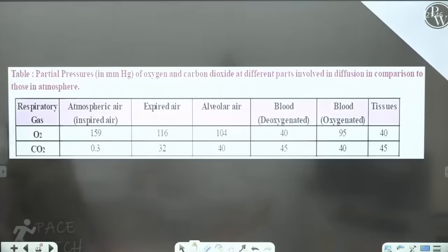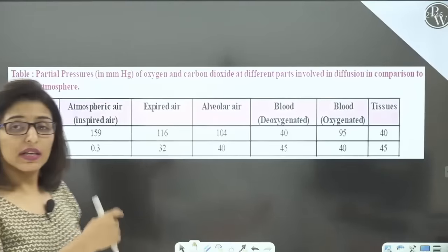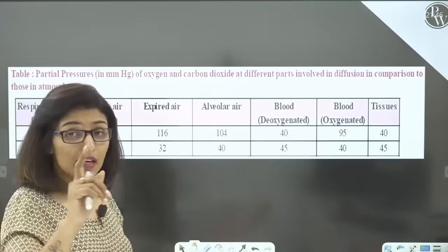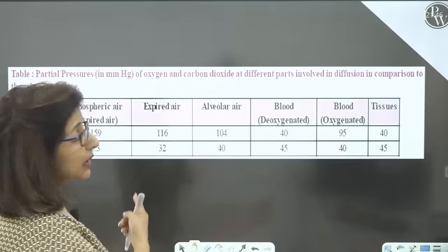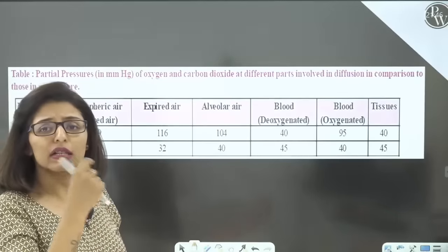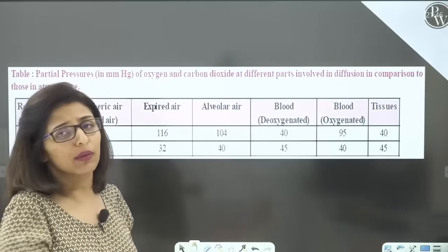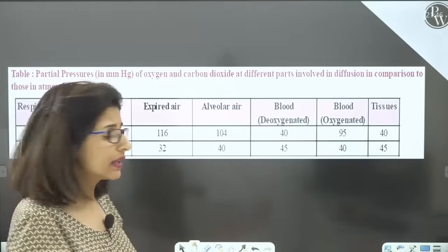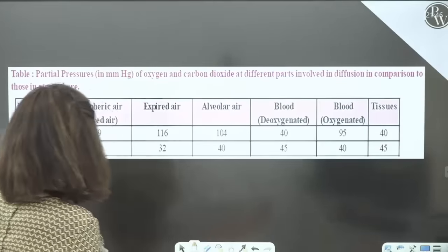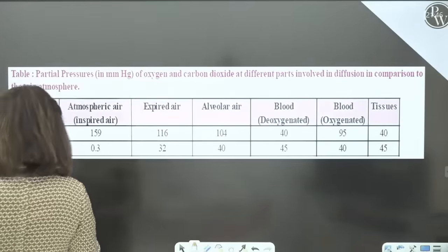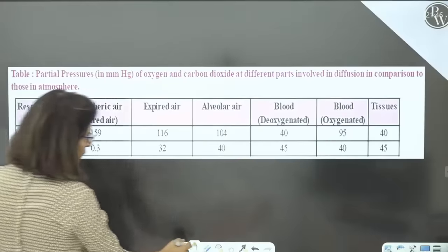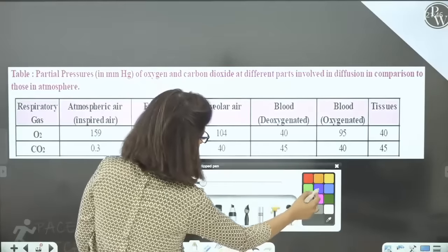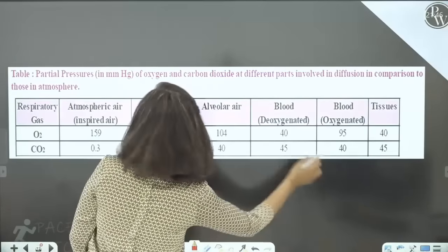Before moving to the next topic, focus on the NCERT table — it is super duper important. Let's quickly revise once again: we are studying partial pressures of two respiratory gases — oxygen and carbon dioxide — measured in mmHg. Atmospheric air: PO₂ = 159, PCO₂ = 0.3. Expired air: PO₂ = 116, PCO₂ = 32. These values drive movement from atmosphere into alveoli.